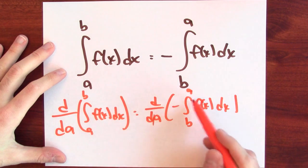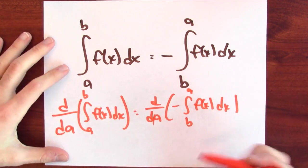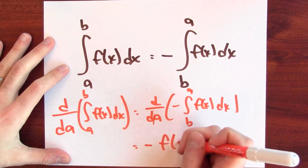But now, this is the derivative of the top endpoint, which is just the usual fundamental theorem of calculus. So this is negative f of a.